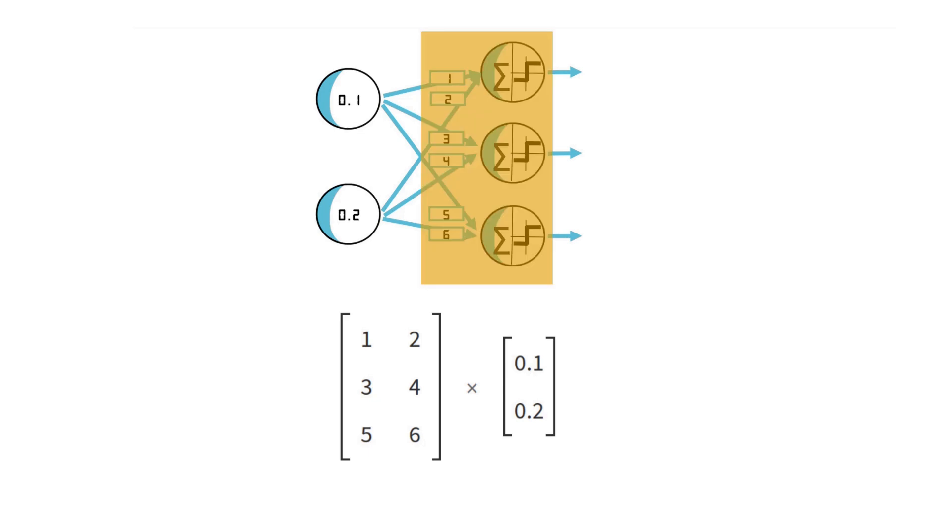In essence, each layer in an MLP can be represented as a matrix of weights. Each row of the matrix corresponds to the weights of one of the perceptrons in that layer, and the number of columns matches the number of inputs from the previous layer. The input data can also be turned into a vector.